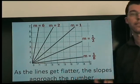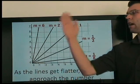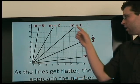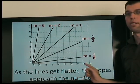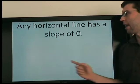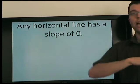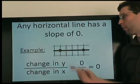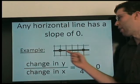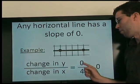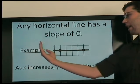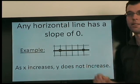Let's consider a new case. We know that as lines get flatter and flatter, their slopes decrease. So what number are these slopes approaching? 0. So it makes sense that a horizontal line has a slope of 0. And we can calculate this in the normal way — we pick two points, there's no change in y, the change in x is 4, so the slope is 0 over 4, or 0. What this means is as x increases, y does not increase.